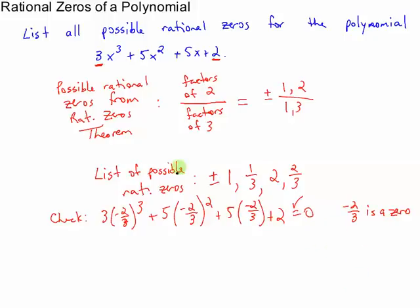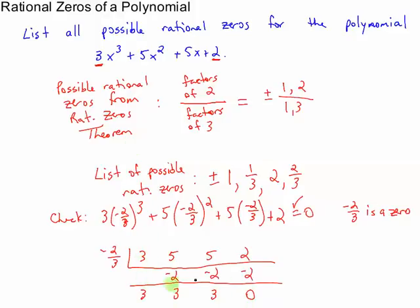Another way is to do synthetic division with negative 2 thirds out in the front. So if we do that, we're going to put a 3, a 5, a 5, and a 2 here. And then go through the synthetic division. And if we get a zero for the remainder, then this is a zero. So let's go through that real quick. So I've run through the synthetic division. We get a remainder of zero. That means negative 2 thirds is a zero.